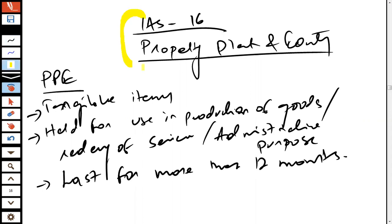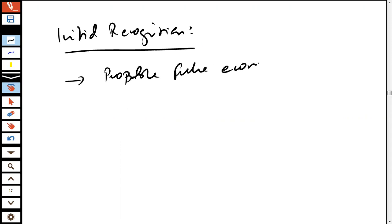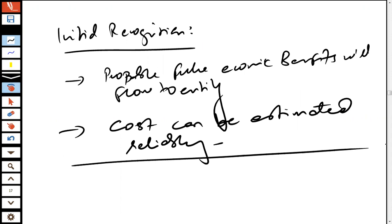In accordance with IAS 16, property, plant and equipment are the tangible items held for use in the production of goods, for the rendering of services, or for administrative purposes, expected to last more than 12 months. Property, plant and equipment can initially be recognized when probable future economic benefits will flow to the entity and the cost can be estimated reliably.